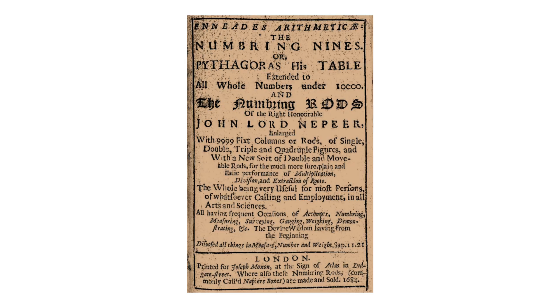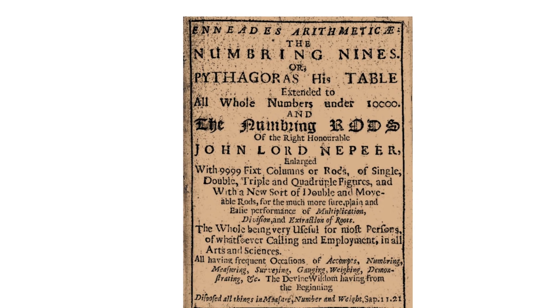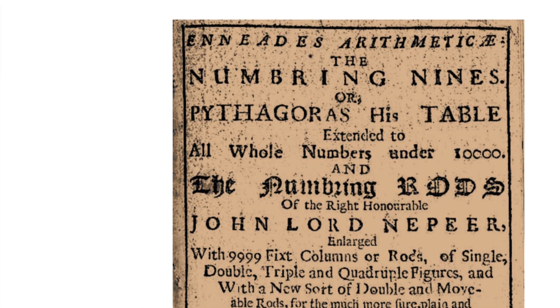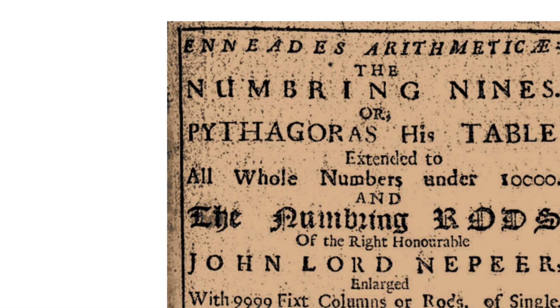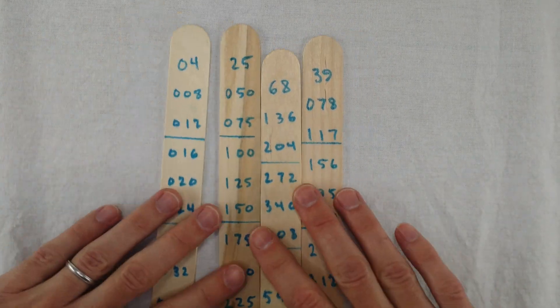Each rod is just a multiplication table for the number that's written on top. Like the rod for 35 has 35, and then 70, then 105, all the way down to 315. This is what all that Pythagoras business is about in the title. Around this time, the standard multiplication table was referred to as Pythagoras's table. The folklore back then was that Pythagoras was the first person to write down a multiplication table, which is almost certainly false. Anyway, to do a multiplication, say something like this one here, you break up the big number in blocks of two digits. So here it'll be 39, 68, 25, and then 04. And then you find those rods and line them all up.